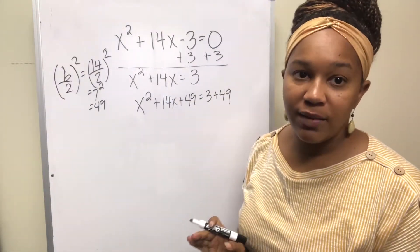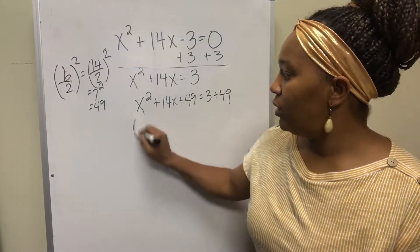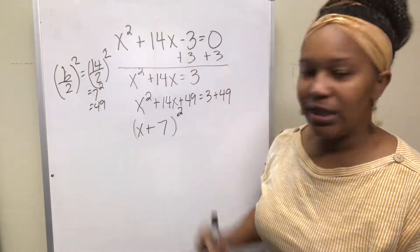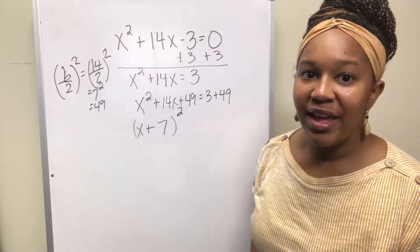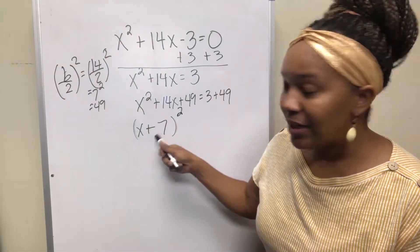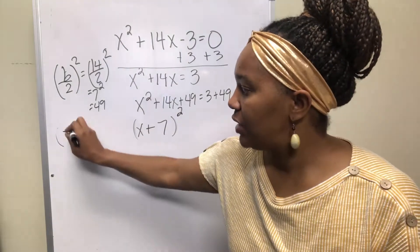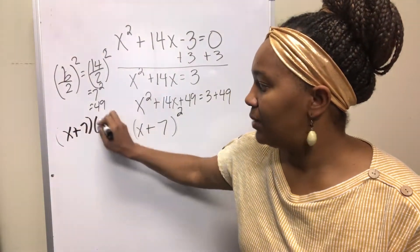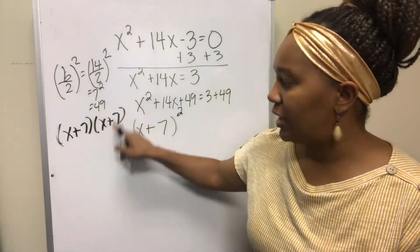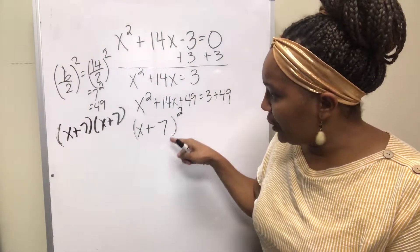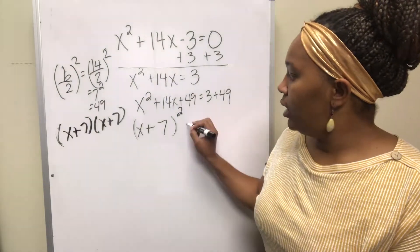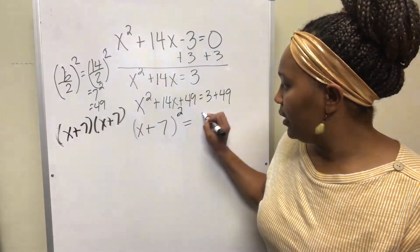Step three continued: write the left side as a perfect square trinomial. The variable is x, the sign is positive, and half of 14 is 7, so this is x plus 7 squared. For those wondering where the 49 went — it's inside x plus 7 squared. If you FOIL x plus 7 times x plus 7, you get x squared plus 14x plus 49. So the 49 is there, just written in a different form. On the right side, add 3 and 49 to get 52.